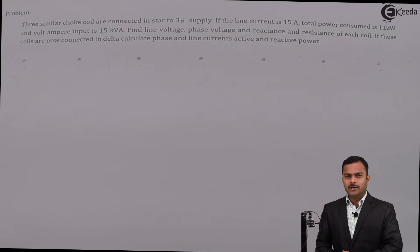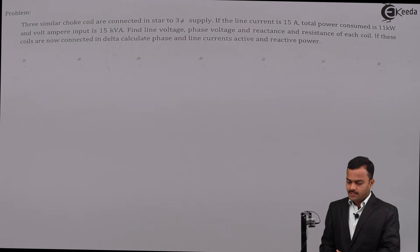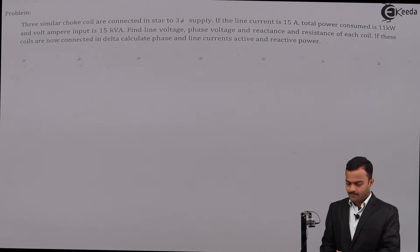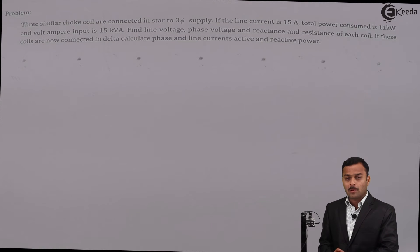In this video we are going to solve a problem based on a three-phase circuit. Three similar choke coils are connected in star to a three-phase supply. The line current is 15 ampere, total power consumed is 11 kilowatt, and volt-ampere input is 15 kVA. Find line voltage, phase voltage, reactance, and resistance of each coil. If the coils are now connected in delta, calculate phase and line currents, active and reactive power.